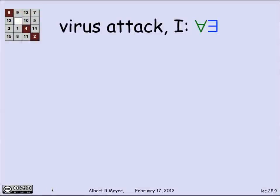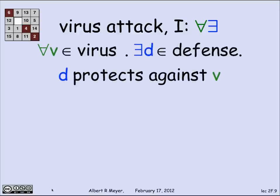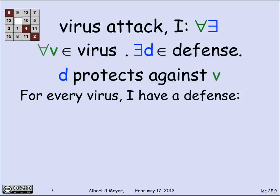The thing that tends to confuse people in the beginning is what happens when you start mixing up quantifiers. So let's look at an intuitive example first. Suppose I look at this statement. This time I'm going to tell you that v ranges over the possible computer viruses, d ranges over antivirus software. And I want to look at the predicate that says for every virus there is a defense such that d protects against v. So each virus I have a defense for.